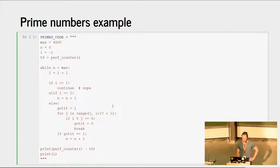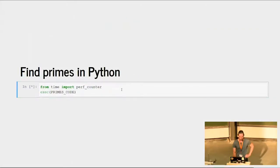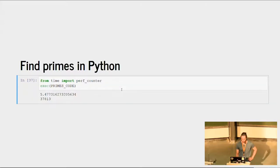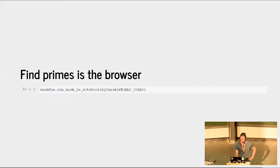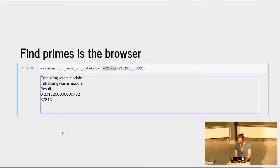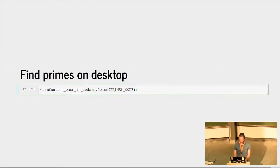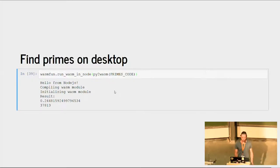Let's calculate the four-thousandth prime number in Python. This code does exactly that and also prints out how long it took. I chose the four-thousandth prime because it takes Python just about four seconds to do this. Now we can take this code, turn it into WebAssembly using our function, and run it in a notebook — and it takes 0.2 seconds. We can do the same and also run it on the desktop in Node, and it's about the same speed. Firefox was slightly slower a week ago, but there was a new release and Firefox got faster to execute WebAssembly.